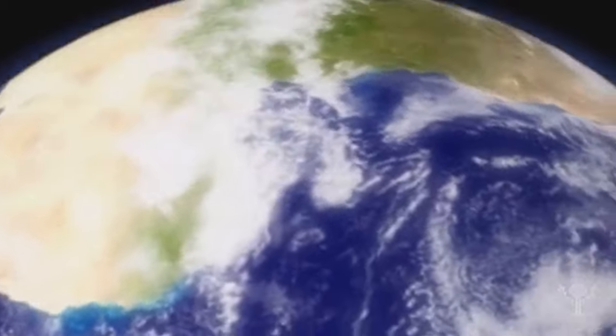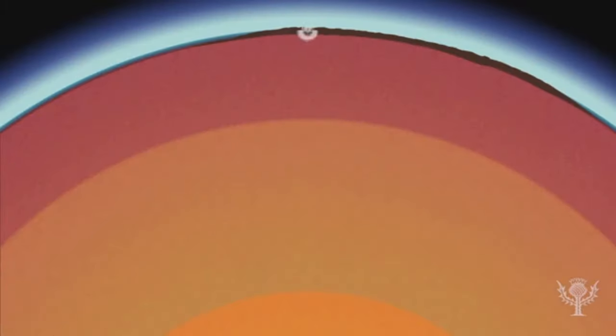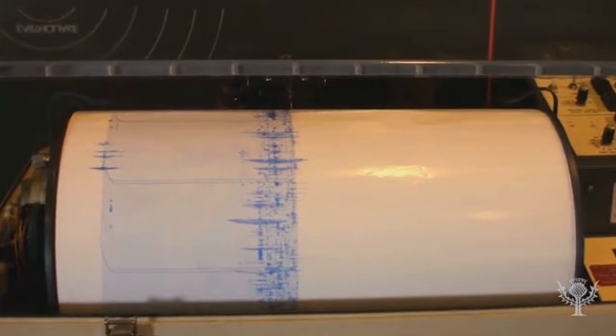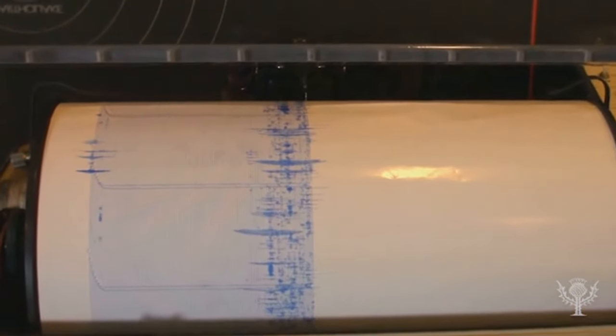The shifting rock in an earthquake causes vibrations called seismic waves that travel within Earth or along its surface. Scientists use an instrument called a seismograph to record data about seismic waves.